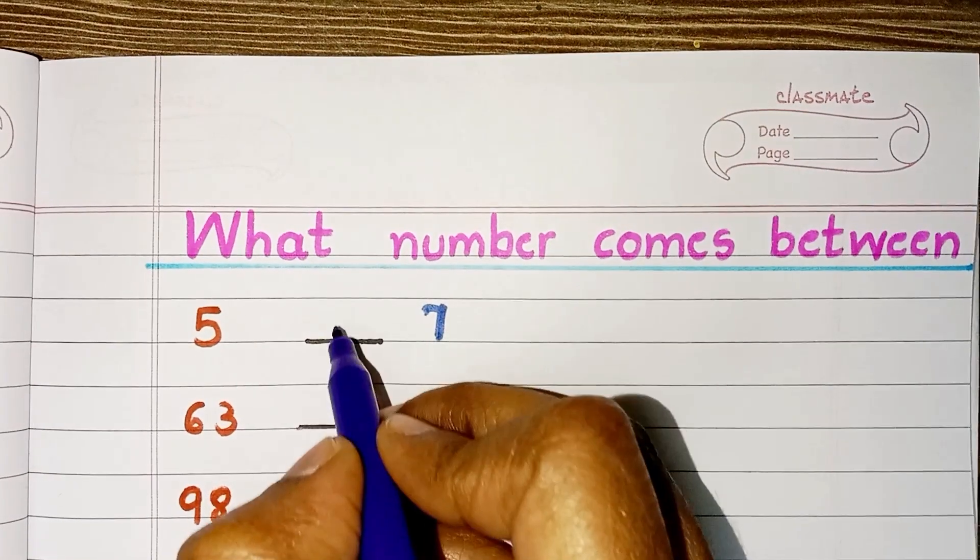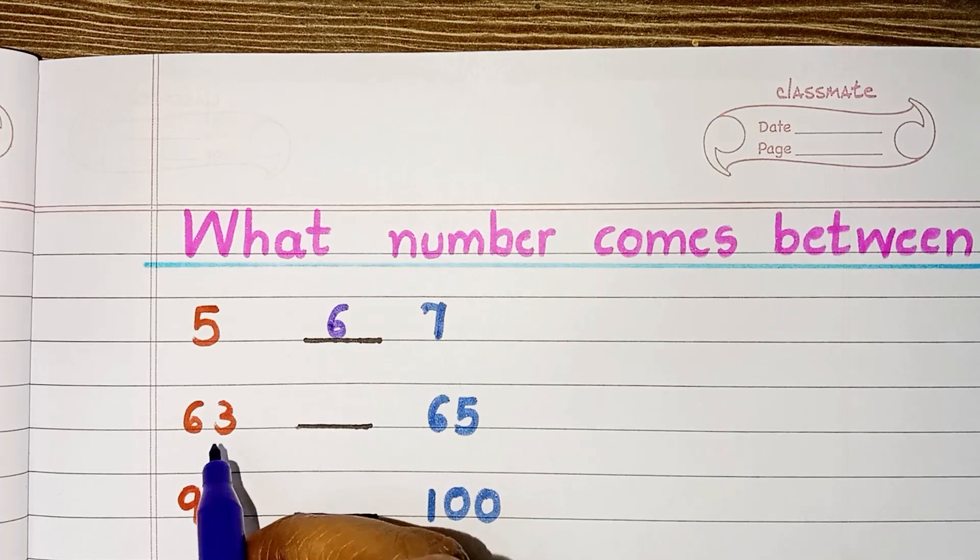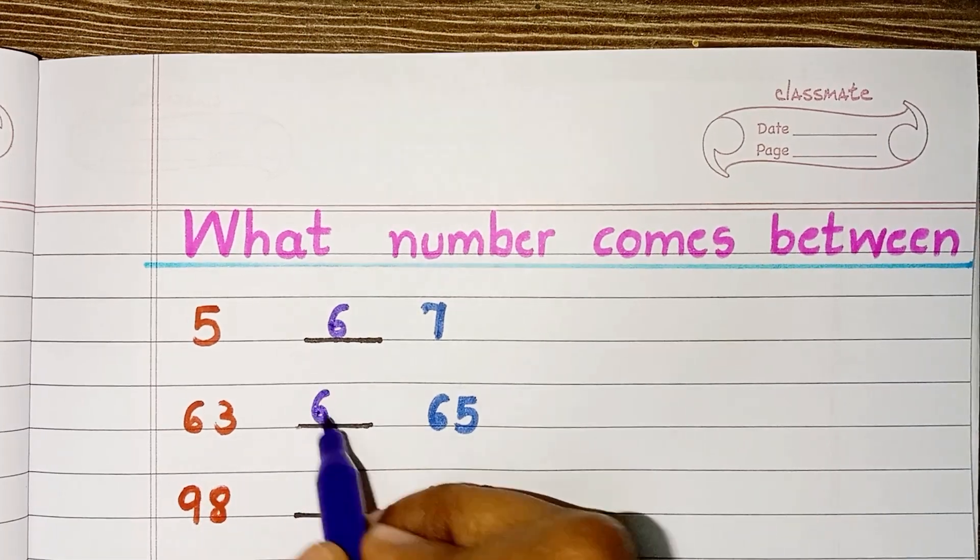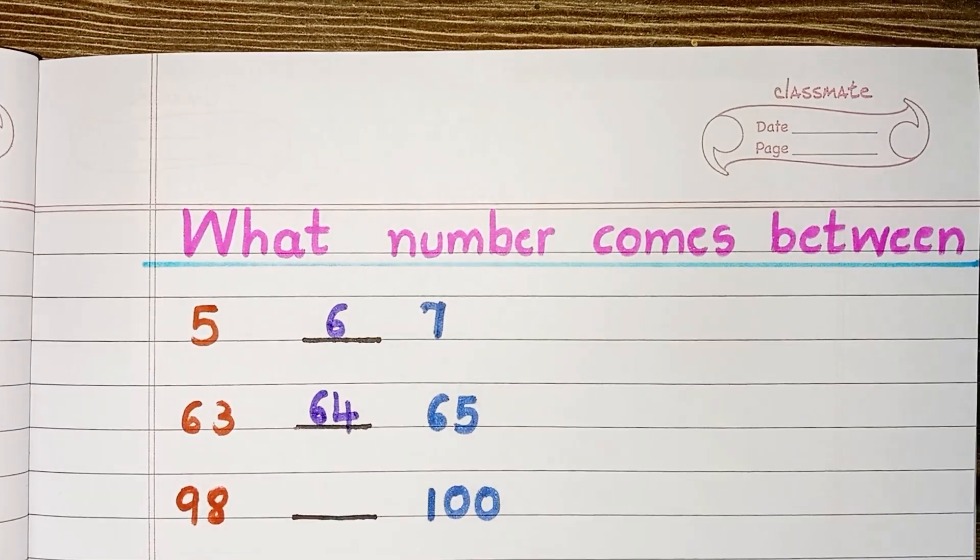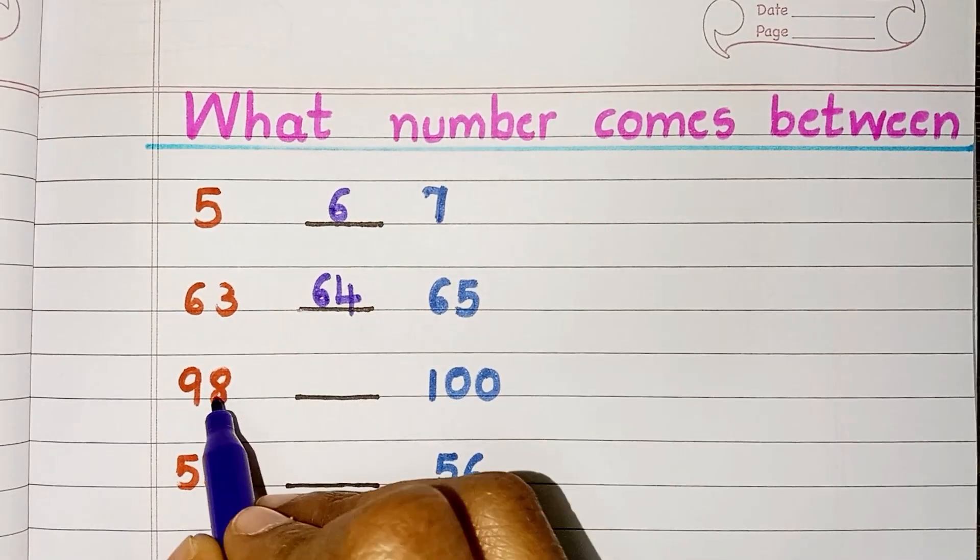So, the answer is 6. Number which comes between 63 and 65 is 64. Number between 98 and 100 is 99.